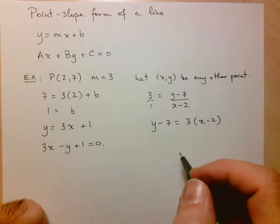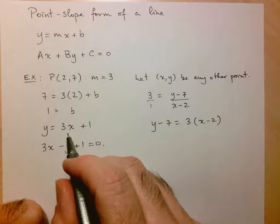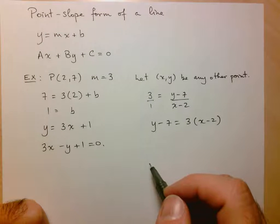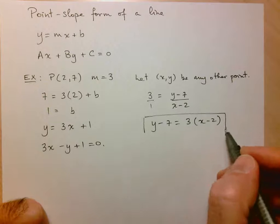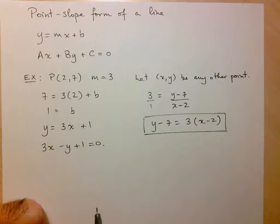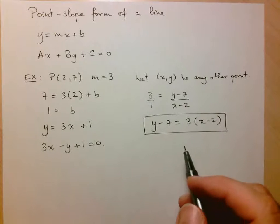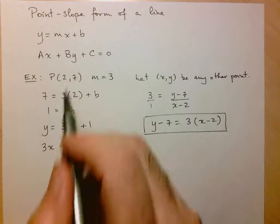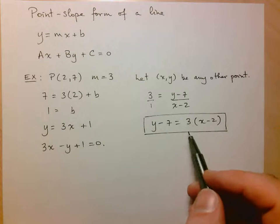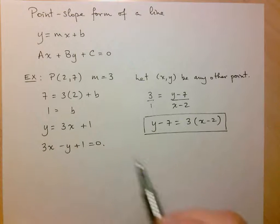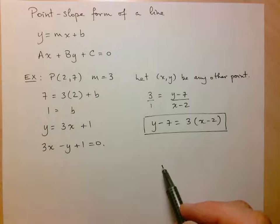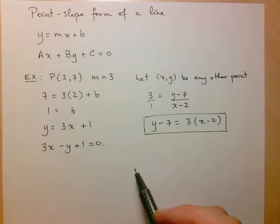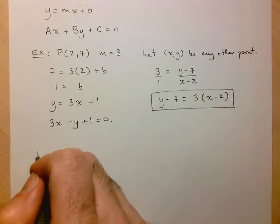Now if I wanted the equation of the line in, say, slope intercept form, all I'd have to do is distribute, bring the 7 to the other side. We'll do that in a second. But this is the form that I want you to look at. This is the form that we're going to be using to write the equation quickly. We see that on the left-hand side of the equation, I just have y minus whatever the y value of my given point is, equals 3, which is the slope, times x minus whatever the given x value is. So I can do this or use this format regardless of what point I'm given or what slope.